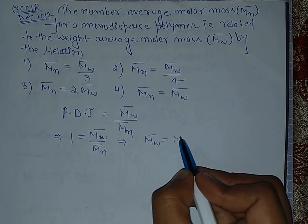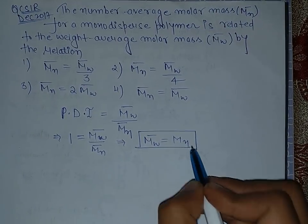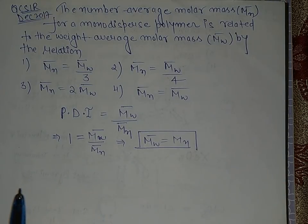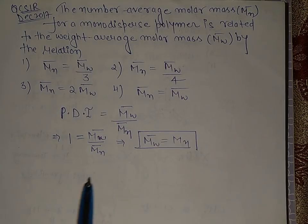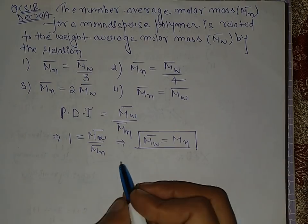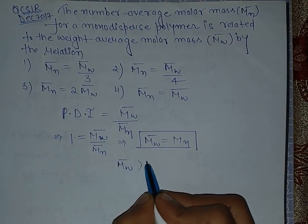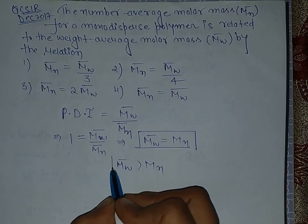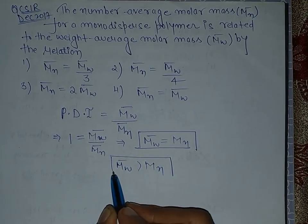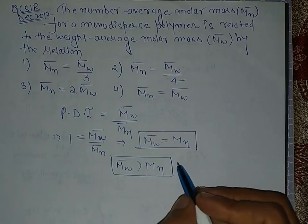Generally for polydispersity index, this is for monodisperse, and generally for polydispersity index we have weight average greater than number average. So don't get confused, just read the question carefully.